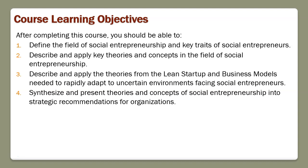The learning objectives for this course: after completing this course, you should be able to define the field of social entrepreneurship and the key traits of social entrepreneurs, describe and apply key theories and concepts in the field of social entrepreneurship, describe and apply theories from lean startup and business models needed to rapidly adapt to uncertain environments facing social entrepreneurs, and synthesize and present theories and concepts of social entrepreneurship into strategic recommendations — in particular, into a business model and business proposal or nonprofit program pitch.